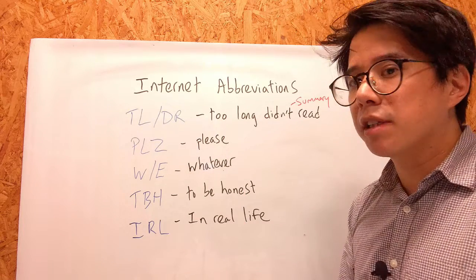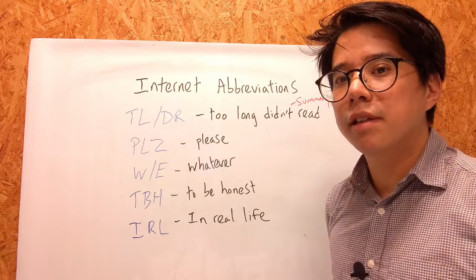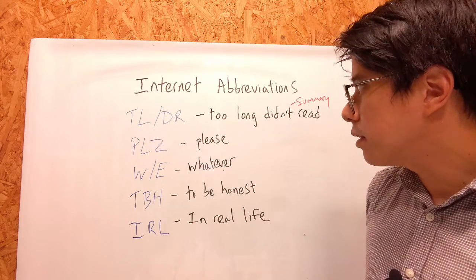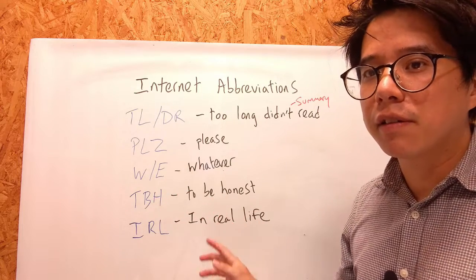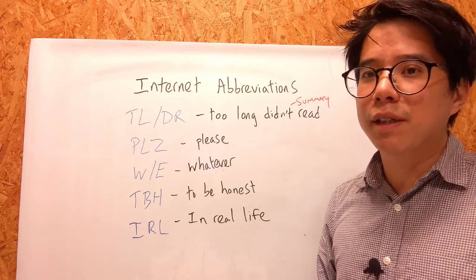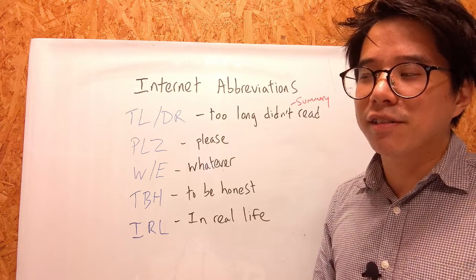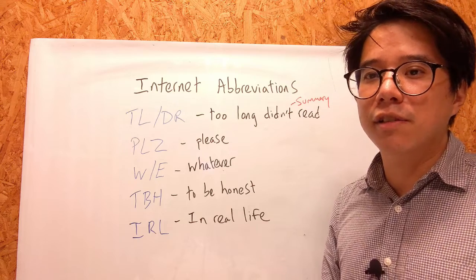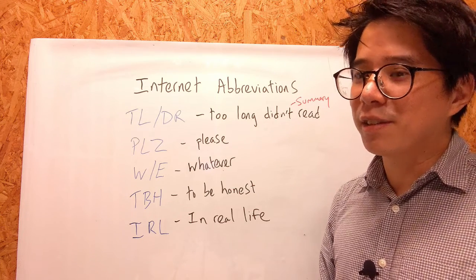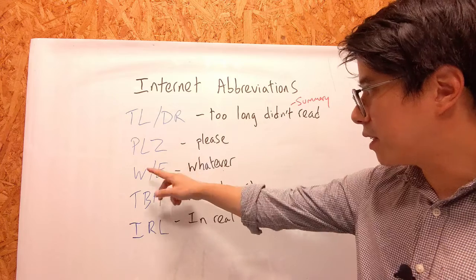The next one is PLZ, which is quite straightforward and just means please. It's quite slangy and casual, and you may see it among young people in their social media posts. Next is W/E, which just means whatever. It has the same meaning as whatever in normal spoken language — quite casual and used by younger people a lot. Whenever I hear whatever, I always think of a parent nagging their teenage children: clean your room, get up, go to school — and the teenager just saying yeah, whatever, like I don't care.